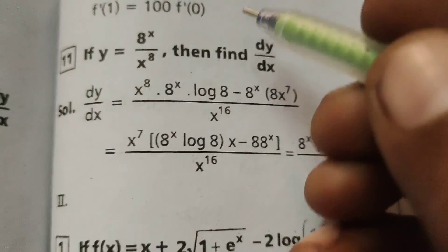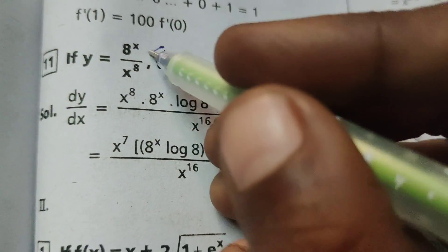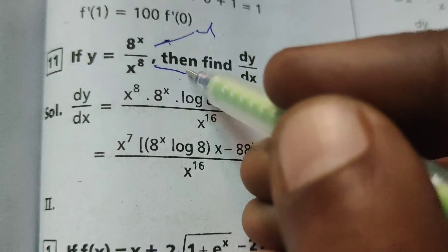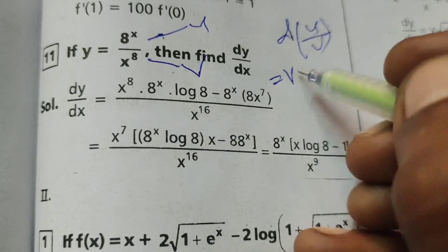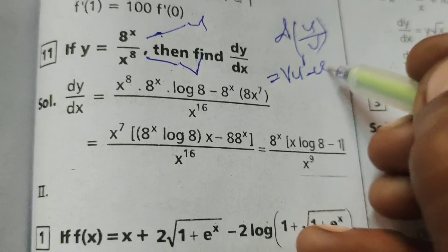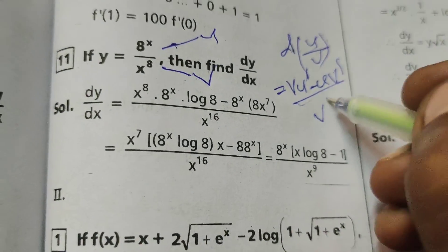dy by dx. Here applying the formula u by v. Differentiation of u by v, that is v into u dash minus u into v dash by v square.